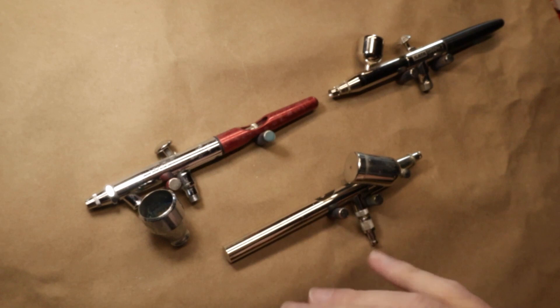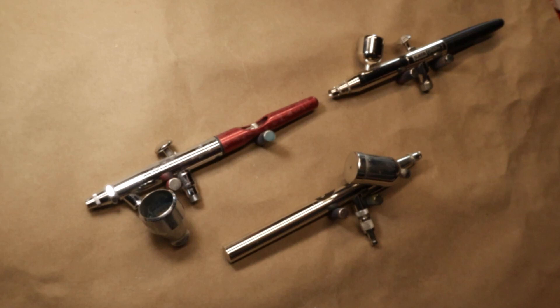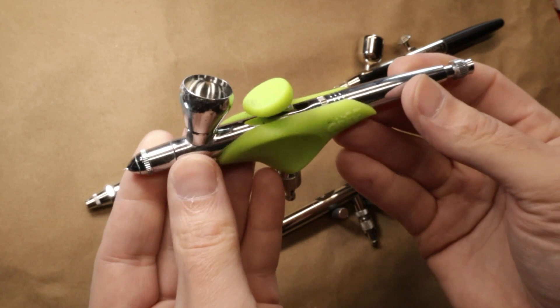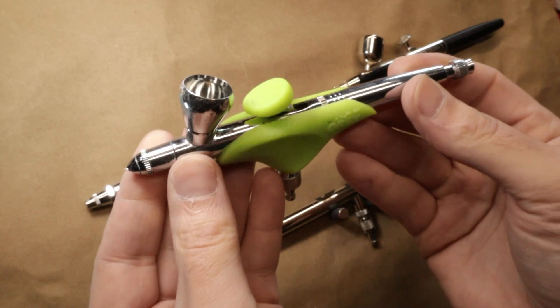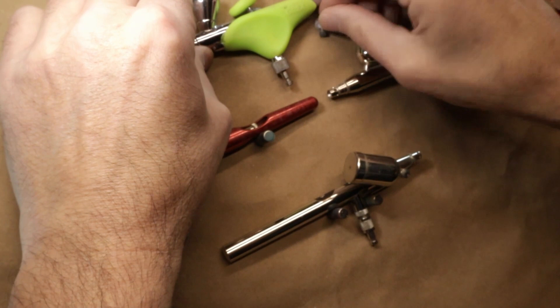Now not to add some confusion to this, but there are airbrushes like the Anthem where you can take out the nozzle and needle and swap it out. Another good example of that is the Grex XGI. This airbrush is a gravity feed brush, but you can remove the nozzle and needle and put all different size nozzles and needles in this, which will allow it to spray all different kinds of paints. So if you see an airbrush that has multiple size nozzles and needles, that's the idea behind it - that it can be very very versatile for you.